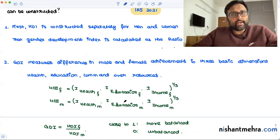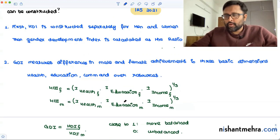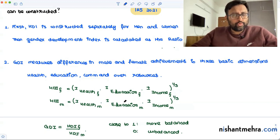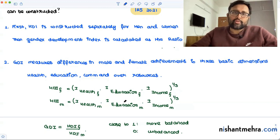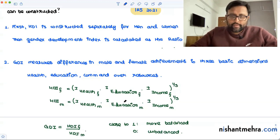You get gender disaggregated data for each of the three dimensions: education, health, and income. For education, there are two sub-dimensions: expected years of schooling and mean years of schooling. Whenever you calculate the index, you need to calculate the dimension index. For education, health, and income, a dimension index has been created. The dimension index is calculated as: (actual value − minimum value) / (maximum value − minimum value).